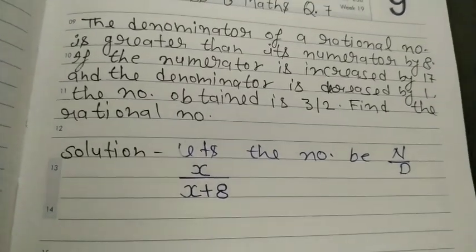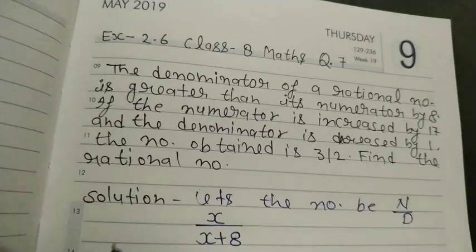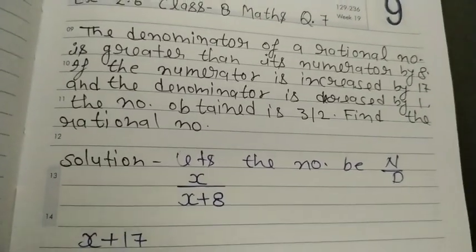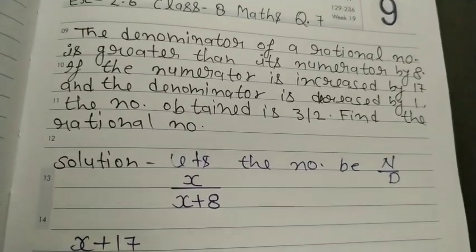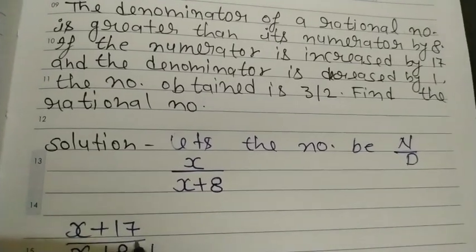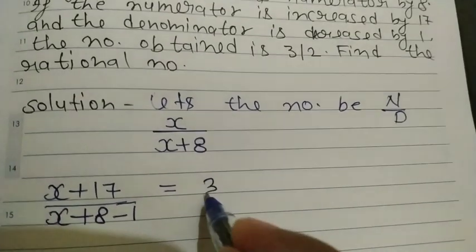If the numerator is increased by 17, let's increase 17 in the numerator. And the denominator is decreased by 1, so we will decrease 1 in the denominator. So the new rational number is 3 upon 2.